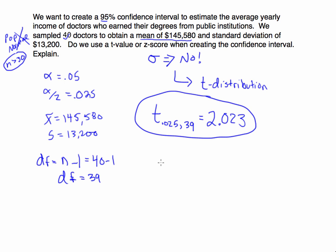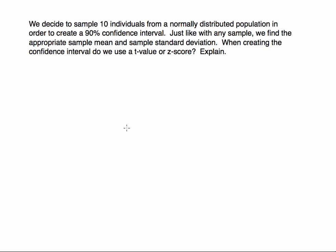Let's look at two more quick examples. In this example, we sample 10 individuals from a normally distributed population — so our central limit theorem requirement is already met. We want to create a 90% confidence interval, which means our significance level is 0.10. We have the sample mean and the sample standard deviation available.